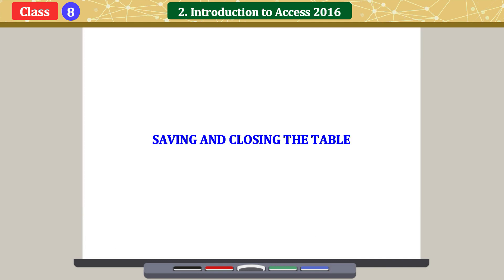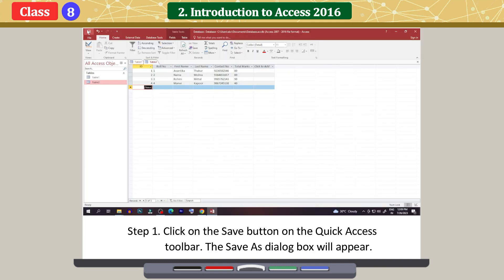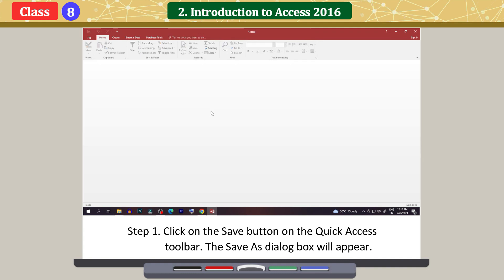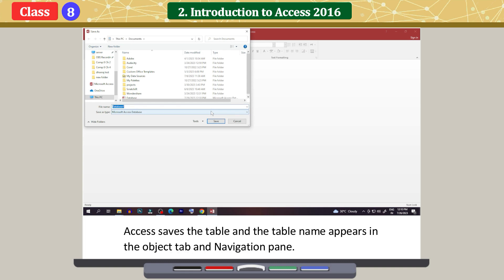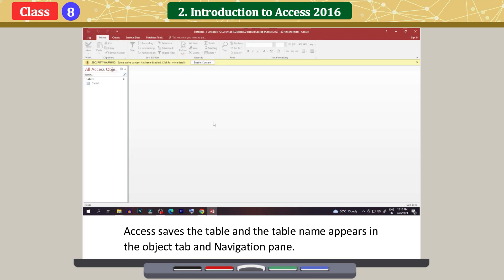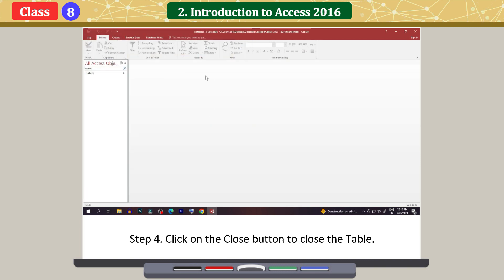Saving and closing the table: Click the Save button on the Quick Access Toolbar. The Save As dialog box will appear. Type the name in the table name box and click OK. Access saves the table, and the table name appears in the Object tab and navigation pane. Click the Close button to close the table.